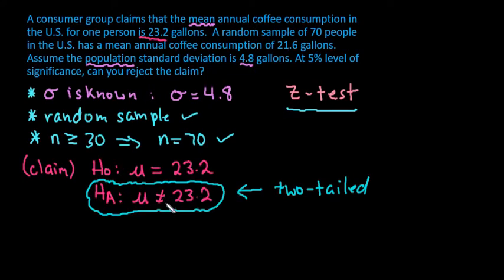There are three types of tests: left-tailed, right-tailed, or two-tailed, and it's always determined by the alternative. If the alternative were 'less than,' we'd have a left tail; if 'greater than,' a right tail; since it's 'not equal to,' we have a two-tailed test. An important note: you always use the population parameter mu to set up the null hypothesis — we don't test about the sample mean since we already know it.